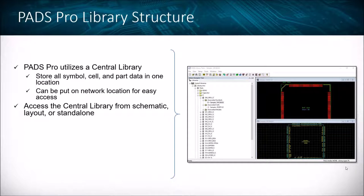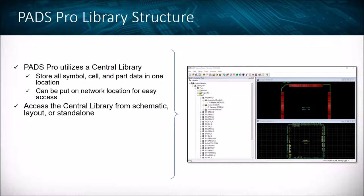The PADS Professional library structure uses a central library, which stores all of your data — symbol, cell, part data, and even 3D data — all in one central library location. We can store this on the network and have all of your designers in multiple locations pointing to that one central library, allowing the librarian to create correct parts that anyone else can use once they're in that central library location.